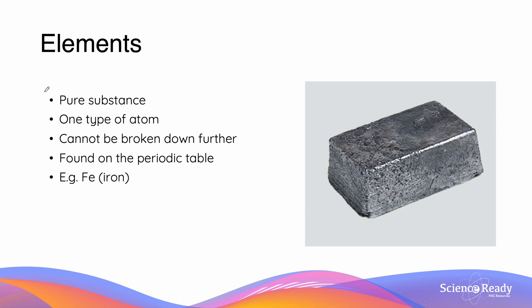So elements are the first type of matter which we will have a look into. What's more particular about elements is the fact that they are pure substances, meaning that there is only one type of particle in there, and in this case, only one type of atom. Since the element is composed entirely of just the one type of atom, we cannot break it further down into its component parts. There is only one element which is there.